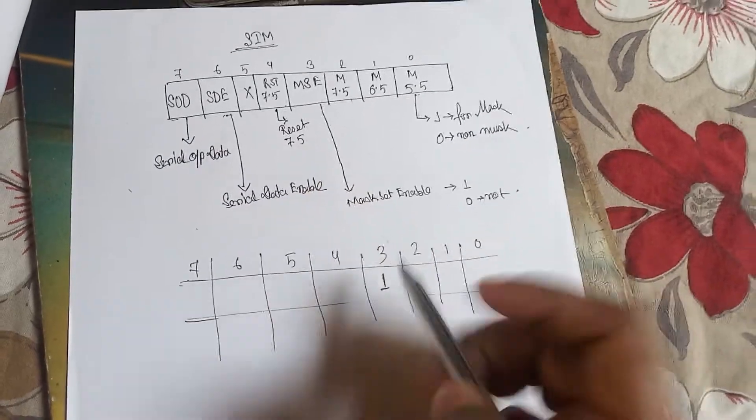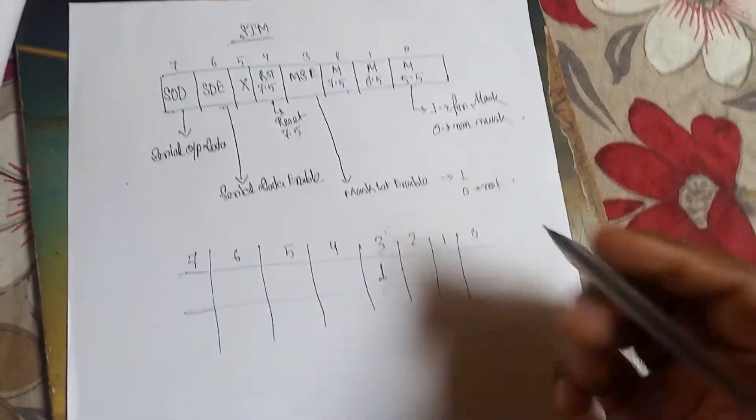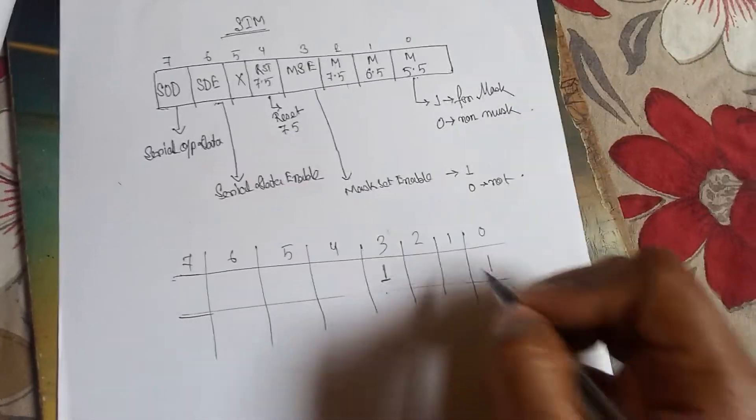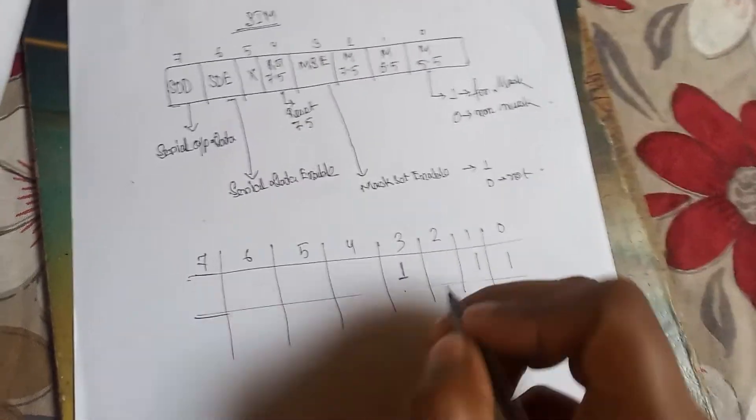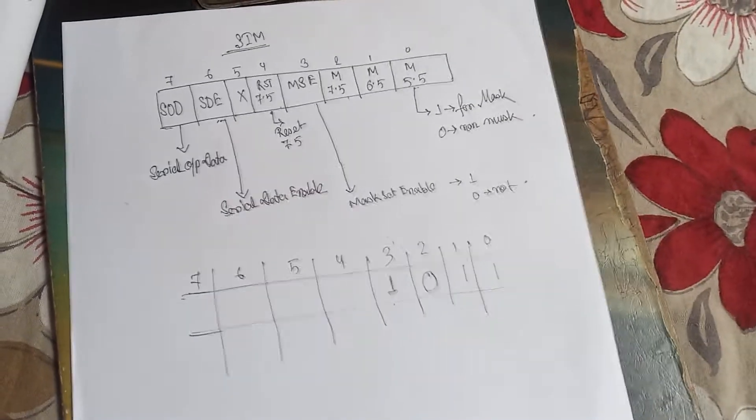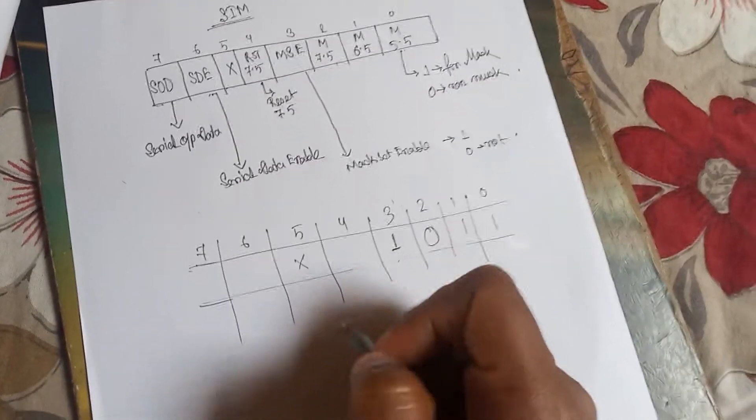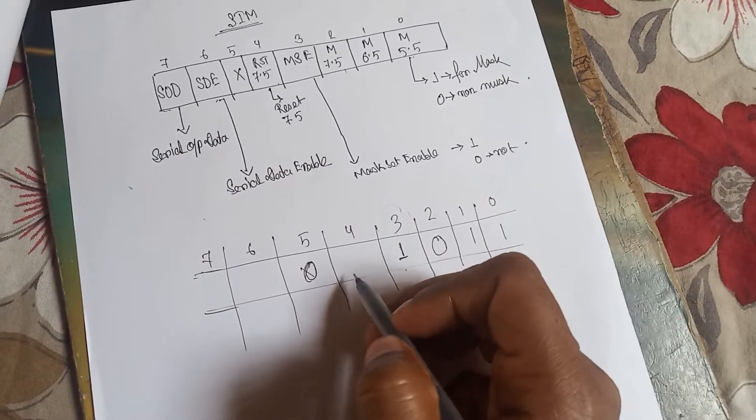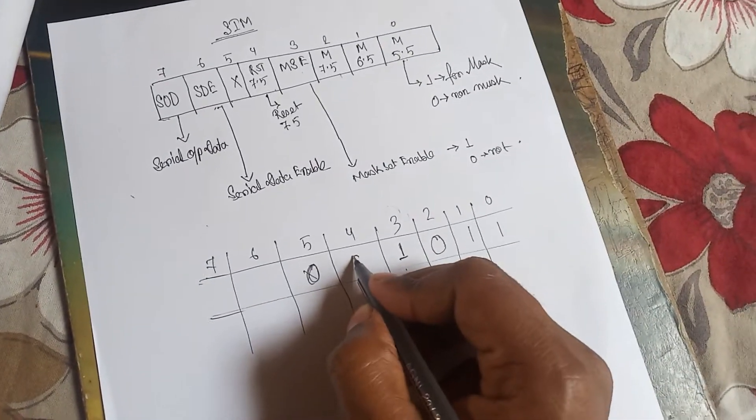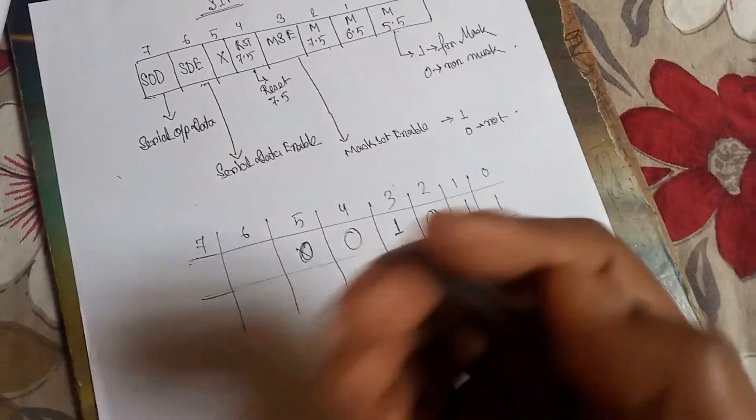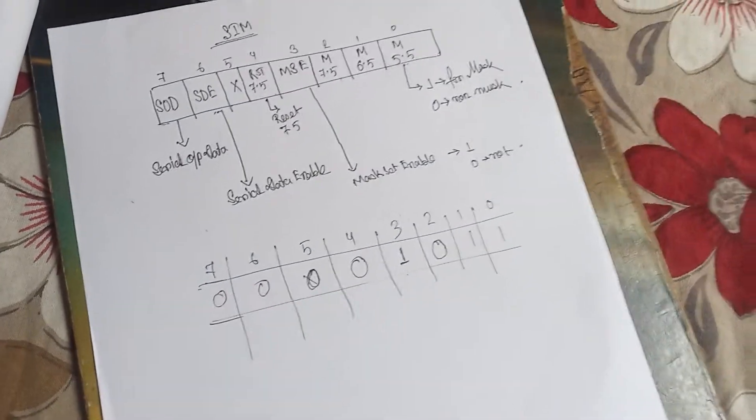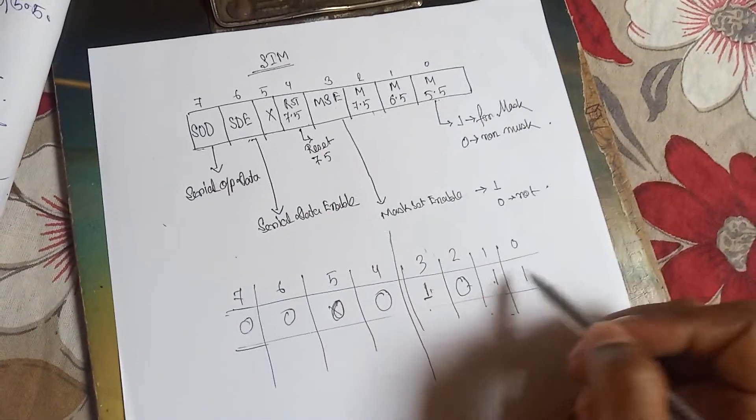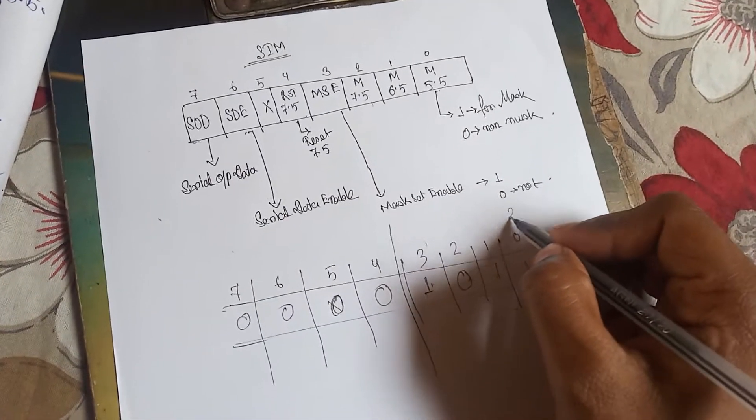If we want to mask RST 6.5 and 5.5, so first of all, what is mandatory? Bit 3 is 1, that's mean Mask Set Enable. Then according to the question, mask 5.5 goes 1, mask 6.5 goes 1, but does not mask 7.5, make it 0. It is undefined, so take it 0. And don't reset the 7.5, so it is not reset. If reset, it goes to 1.